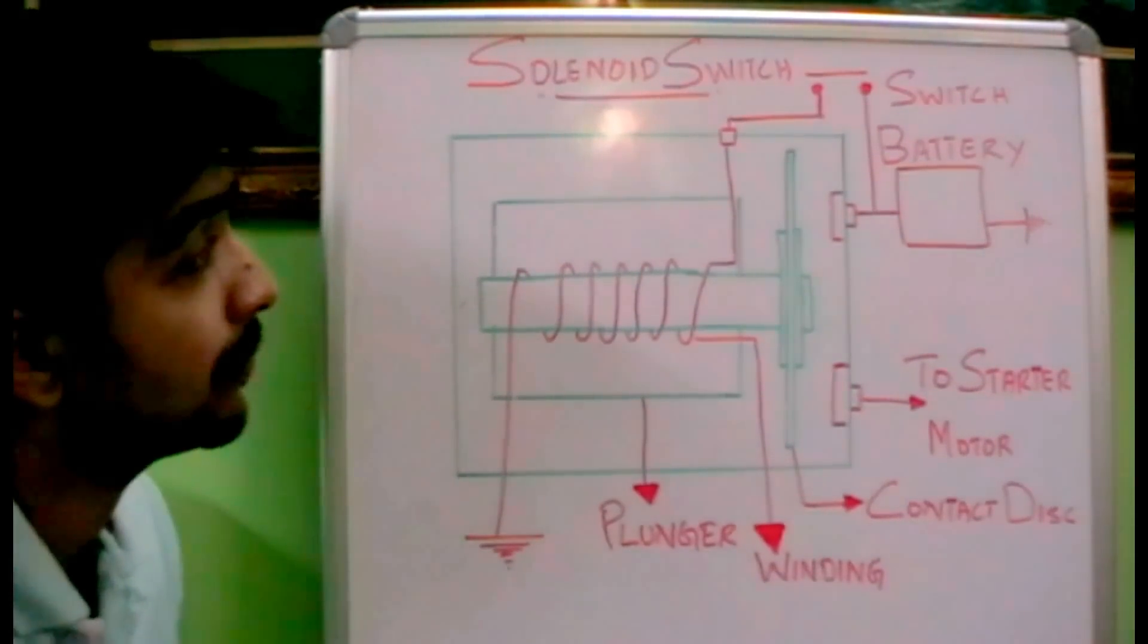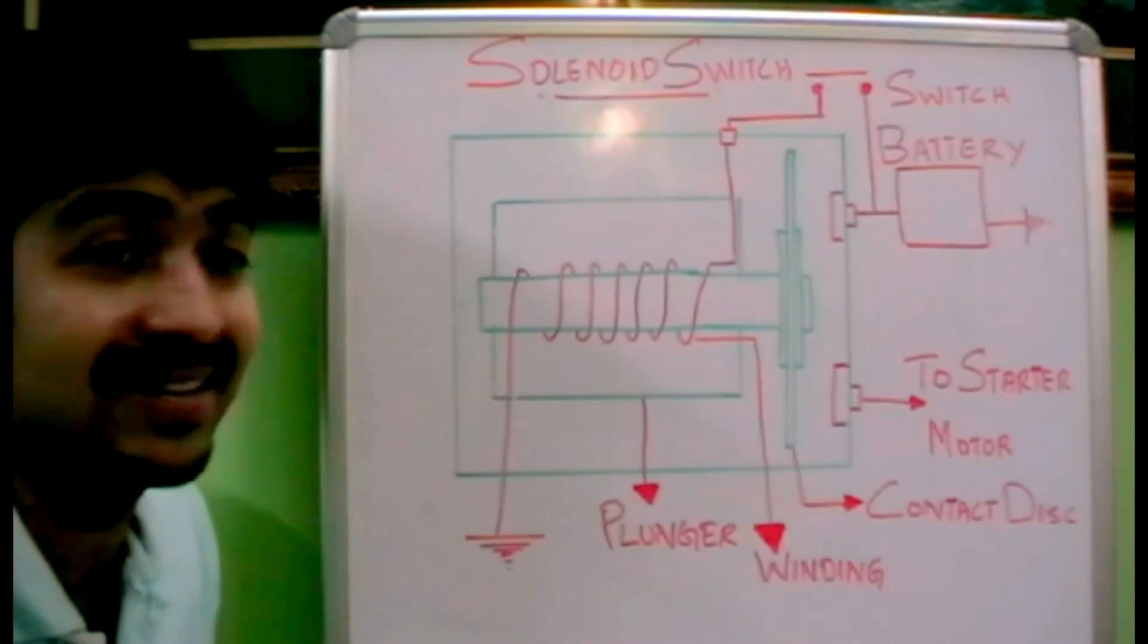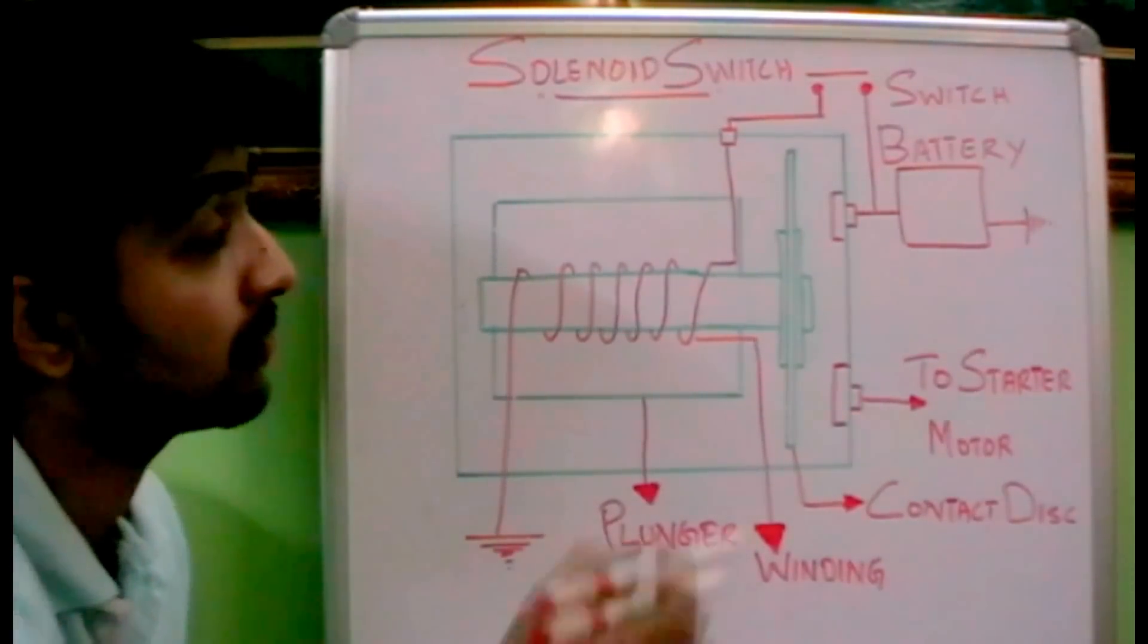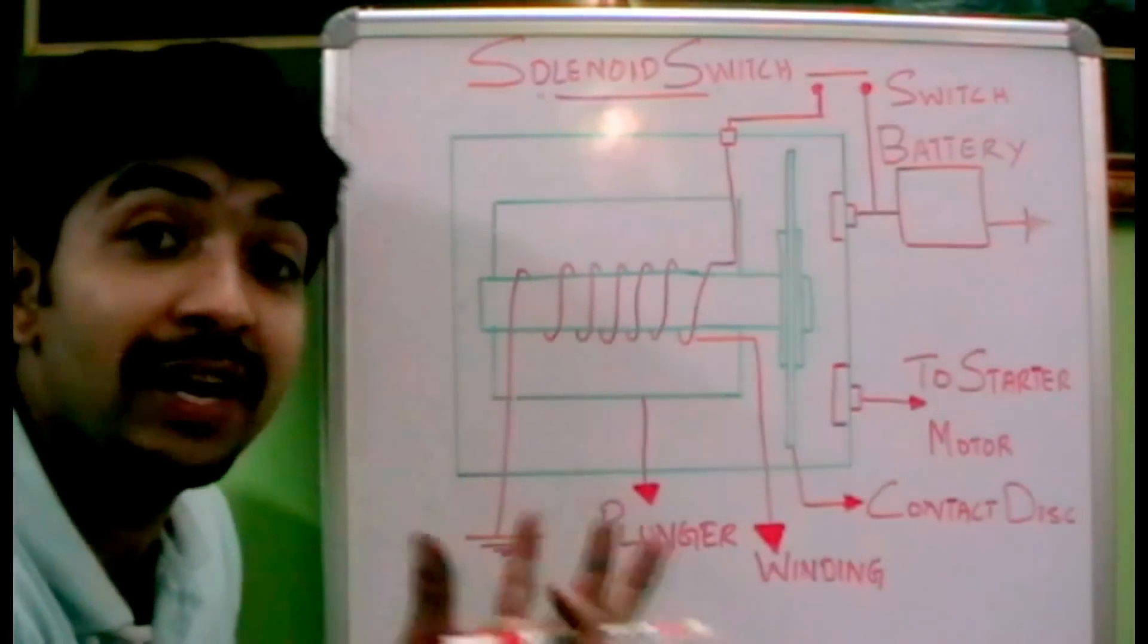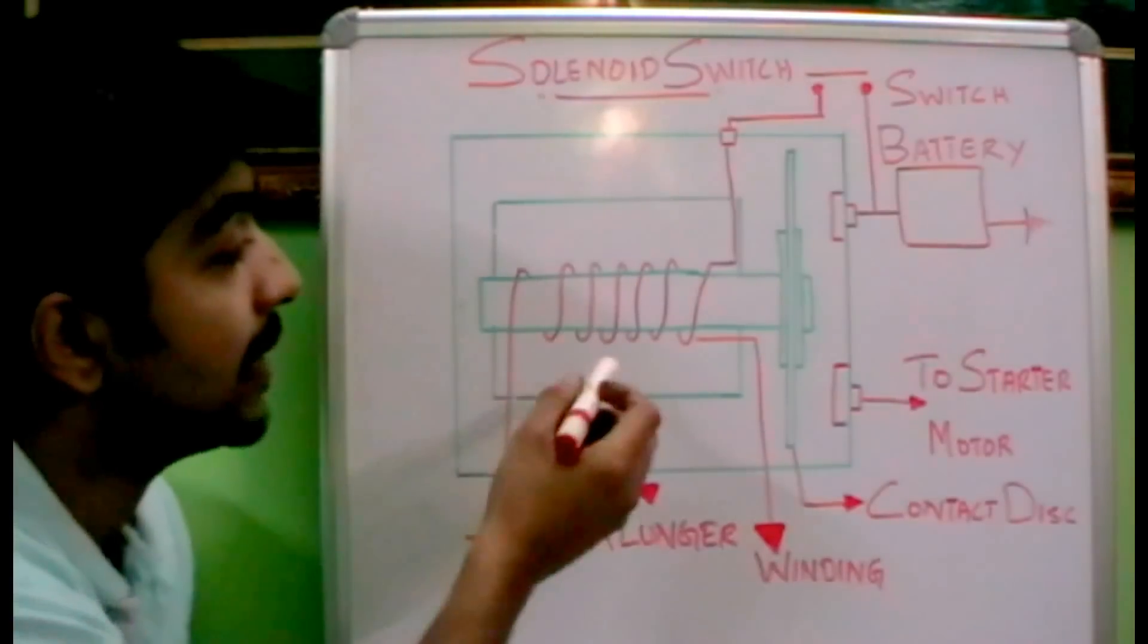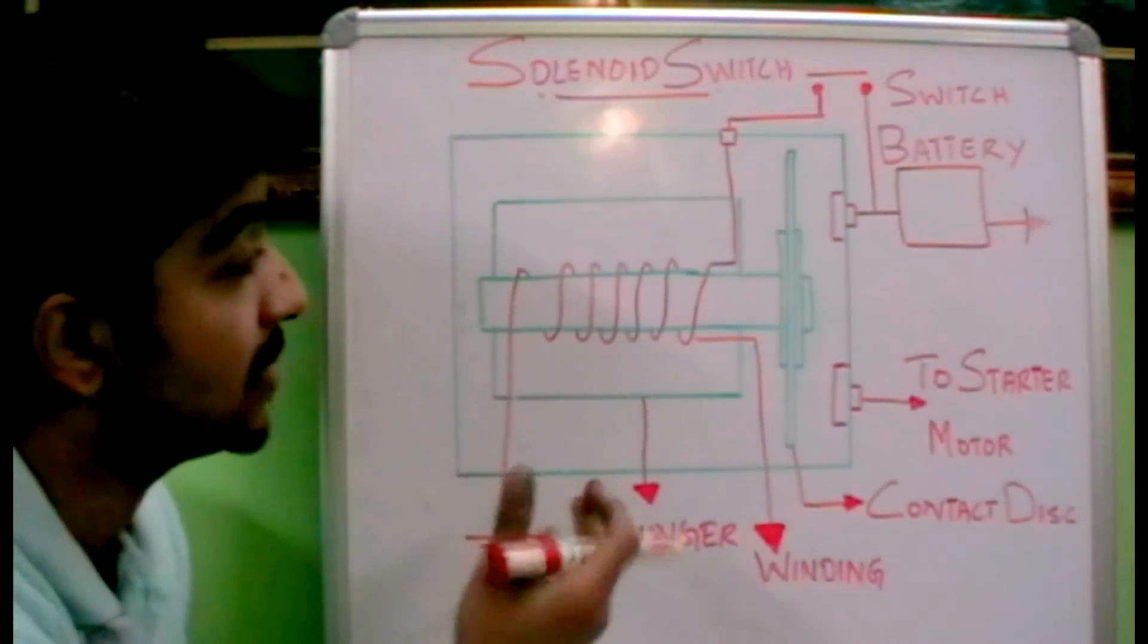So how it works is that when the operator puts the switch or turns the key, the current flows from the battery towards this winding. A magnetic field is created over here, and due to this magnetic field, this gets energized and the plunger moves.